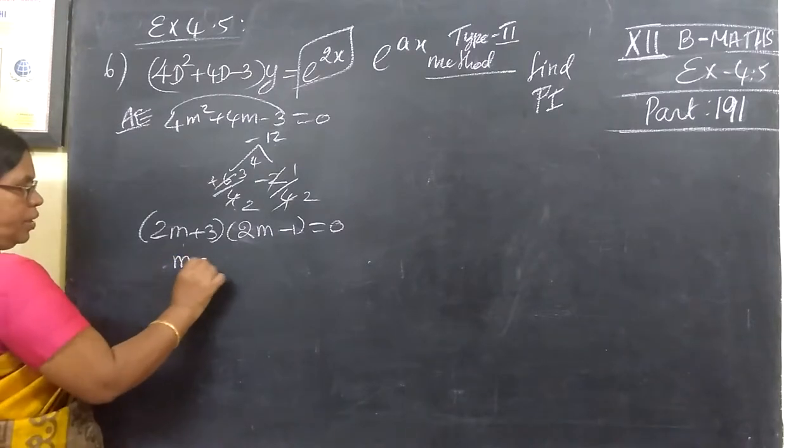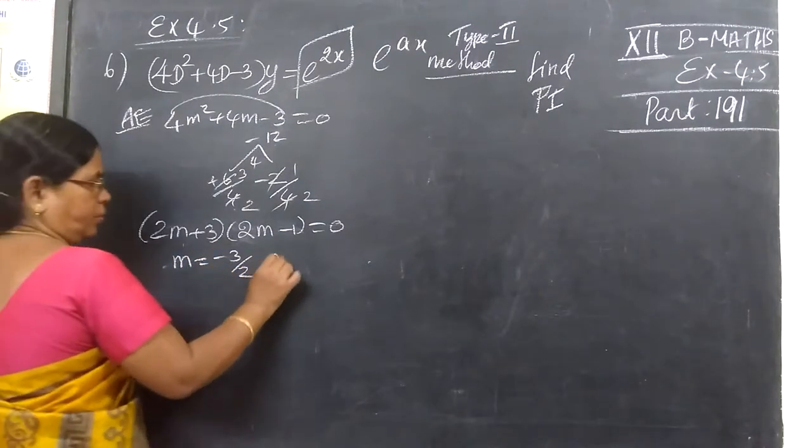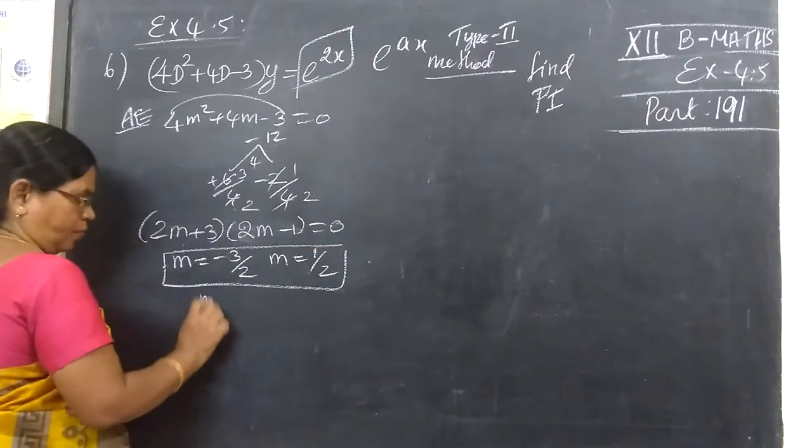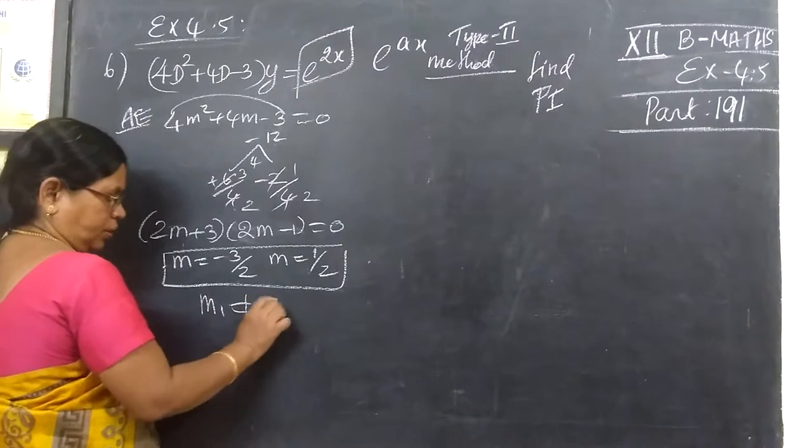So this implies m equal to minus 3 by 2, then m equal to 1 by 2. So m1 not equal to m2.